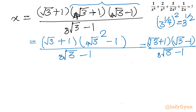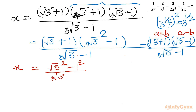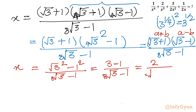Now for the last time we will apply the difference of two squares. So x becomes (root 3)² − 1², which is 3 − 1, all divided by (8th root 3 − 1). This further gives us 2 over (8th root 3 − 1). This is our ultimate value of x.